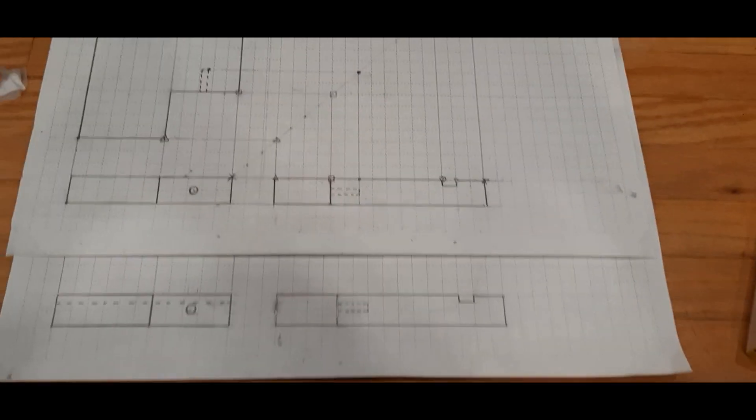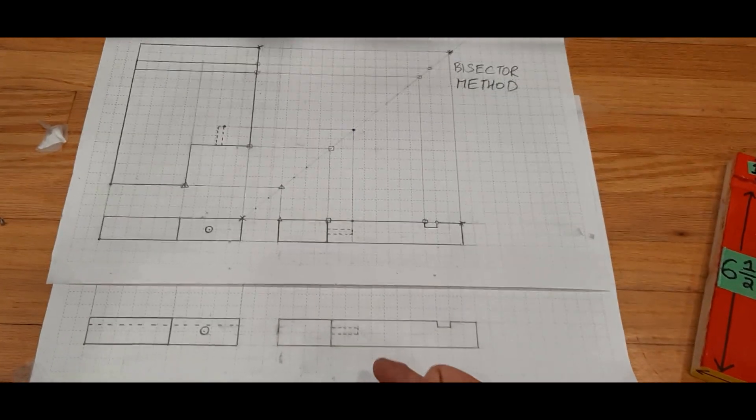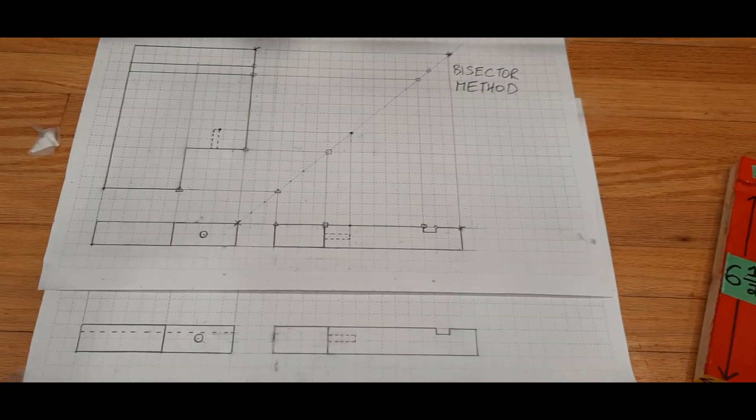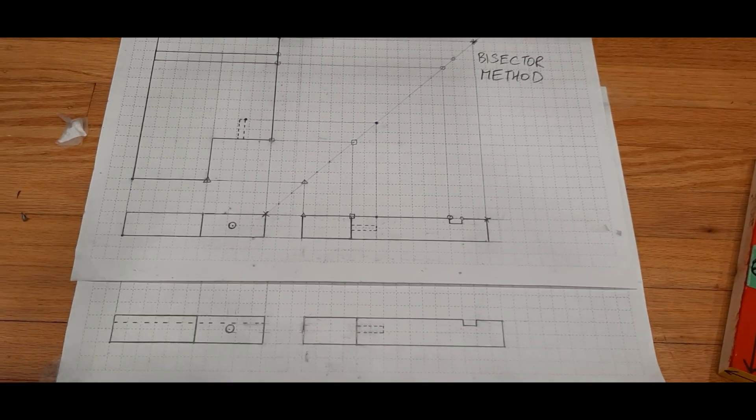And once again, whether you chose to use the bisector method or the basic method, the result is the same. And that's how you do a three-view orthographic drawing. Thanks for watching.